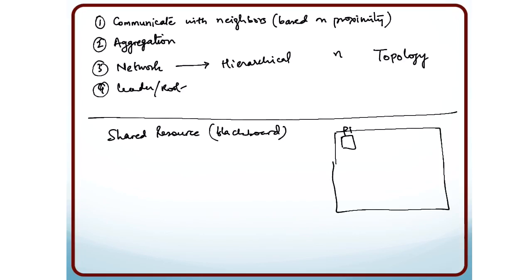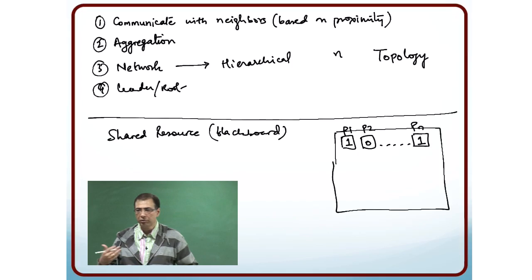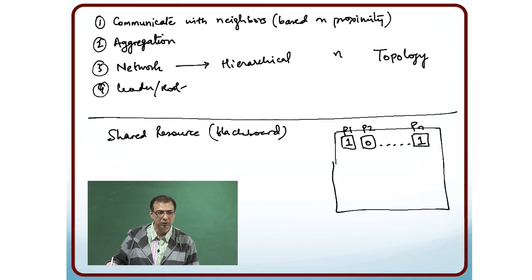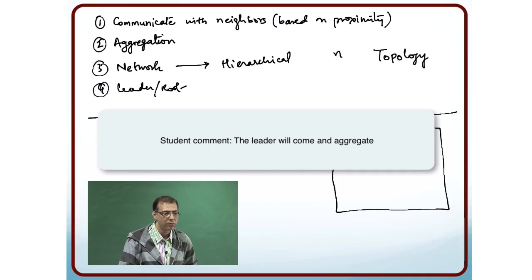Processor 1 comes and writes down 1 over here. Processor 2 says my number is even, so I am going to write a 0. We are counting the number of odds, and then processor n comes and writes 1. Now what do you do? Each one of you has written onto the shared resource — onto the blackboard — what number you have. Now what do you do?